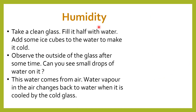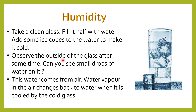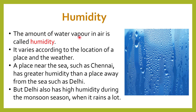Now let's discuss about humidity. Take a clean glass, fill it half with water, add some ice cubes to make it cold. Observe the outside of the glass after some time. You will see small drops of water on the glass. This water comes from air. Water vapour in the air changes back to water when it is cooled by the cold glass. The amount of water vapour in air is called humidity.